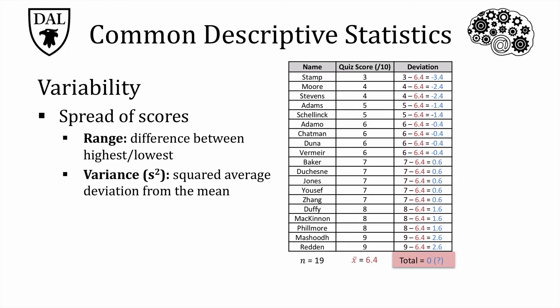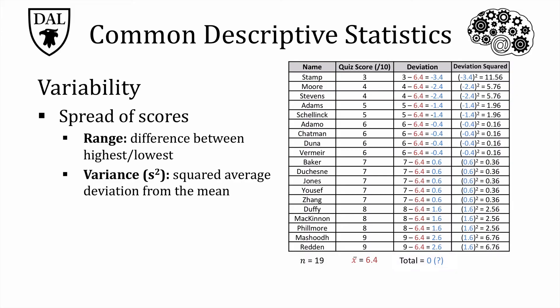There's a simple mathematical solution to this problem. What we can do is square the individual deviations, because a negative times a negative equals a positive, giving us a way to add these up. As long as we do the same thing to all of the values, this doesn't break any math rules. We add up these numbers to get our total squared deviation. Here's the variance equation: it's the sum of each observation minus the mean, squared — to avoid numbers cancelling each other out — divided by n minus 1. Once we plug in our total deviation and divide by n minus 1, we get a mean squared deviation, or variance, of 2.8.